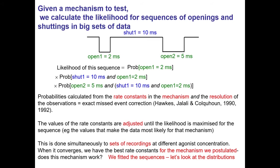This slide shows what we mean by calculating the likelihood of our data. With a sequence of one opening, one shutting, and a second opening with particular dwell times, the likelihood is the probability that the channel opens for two milliseconds, times the probability that it shuts for 10 milliseconds, times the probability that it then opens for five milliseconds. This is calculated with matrix methods including the resolution of the observations, so an exact missed event correction can be applied.